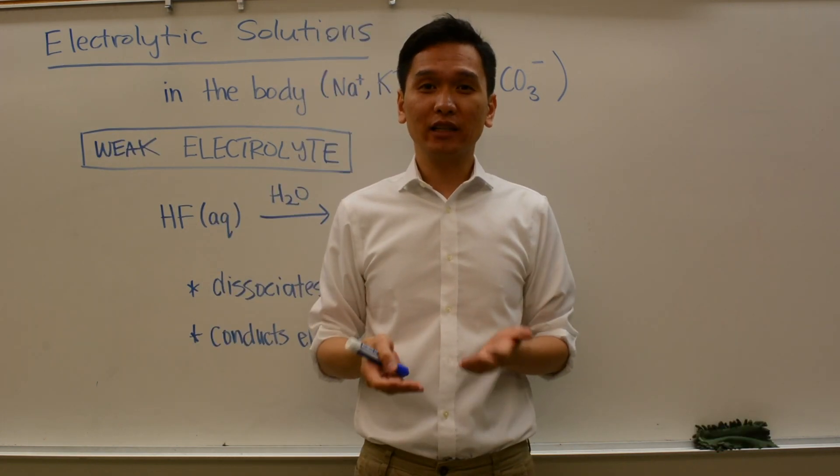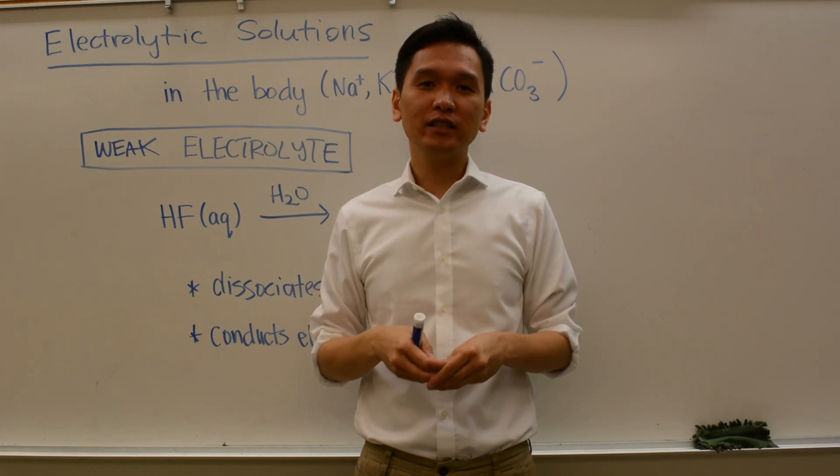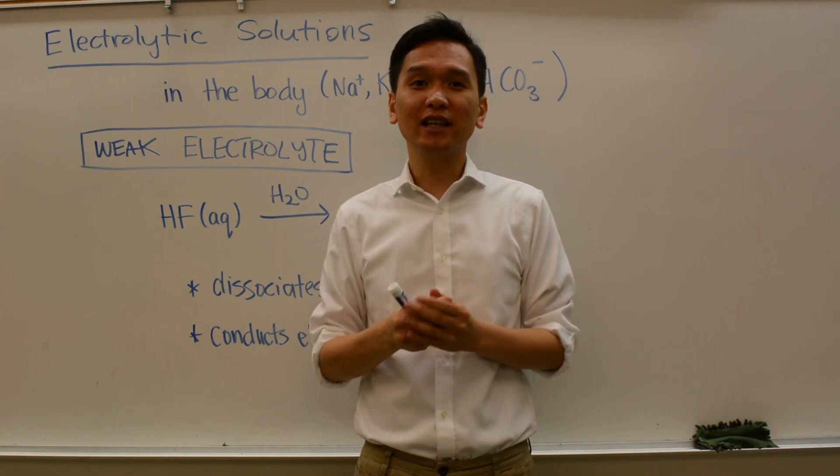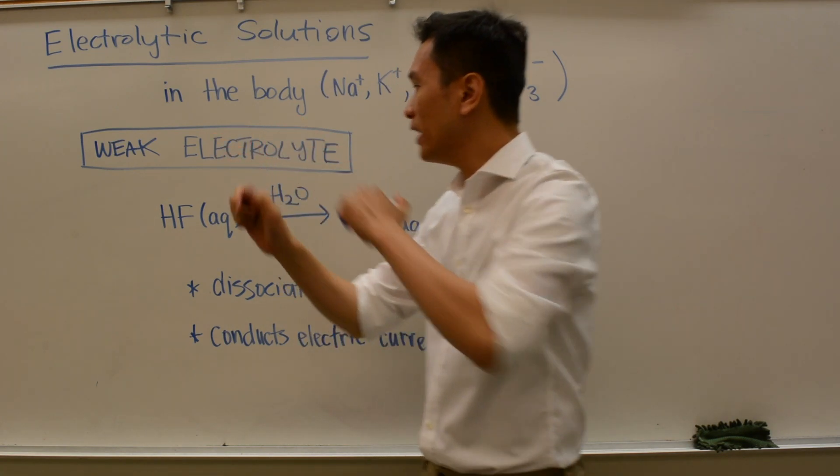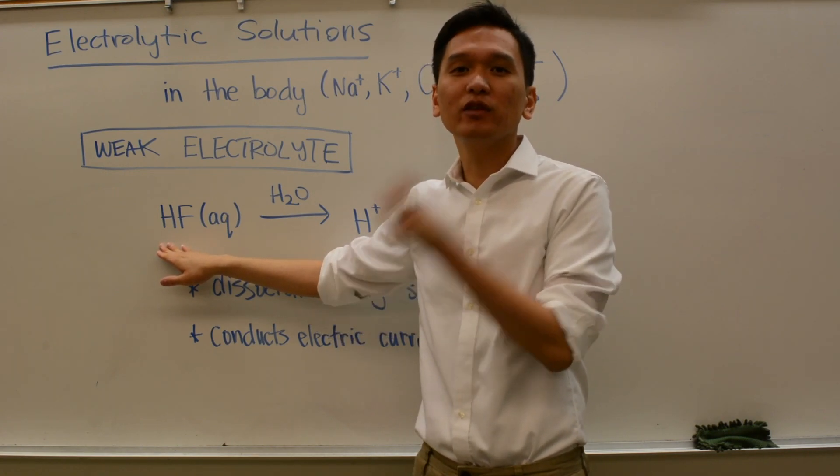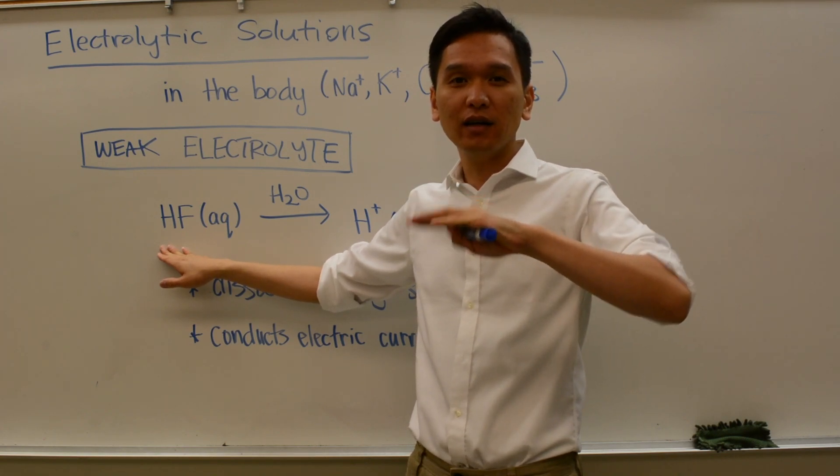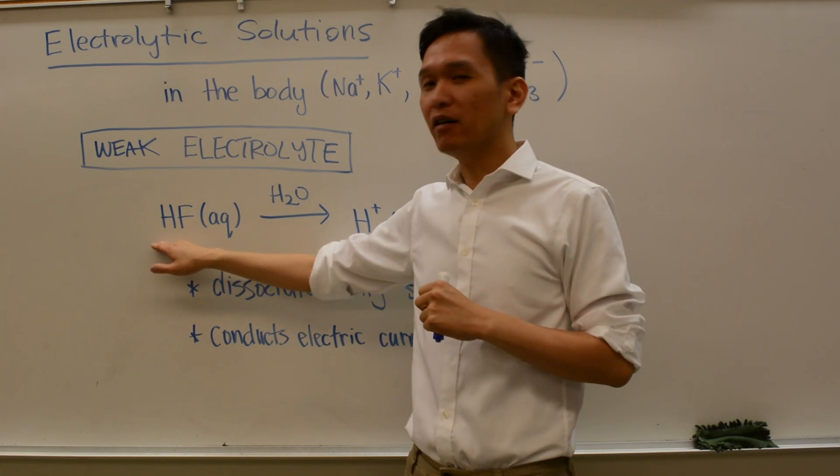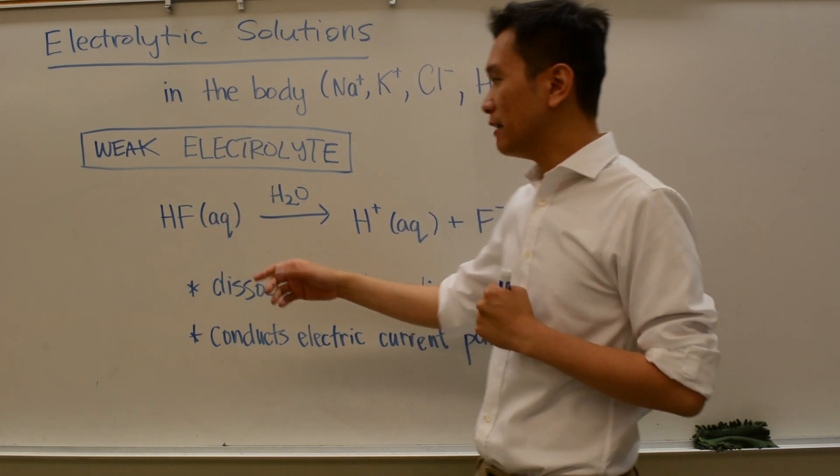What about a weak electrolyte? A weak electrolyte by definition is an electrolyte that conducts electricity partially or weakly. When you have a molecule, weak acids will give you weak electrolytes. For now, if I tell you it's a weak acid, it's going to be a weak electrolyte.